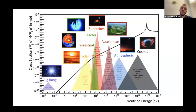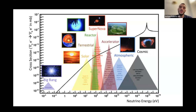Here I'm plotting the neutrino energy on the x-axis as a function of the cross-section. The cross-section is a quantity that particle physicists use to encode the probability of having an interaction. Higher the energy, higher is the probability to have an interaction of your neutrino in your detector.